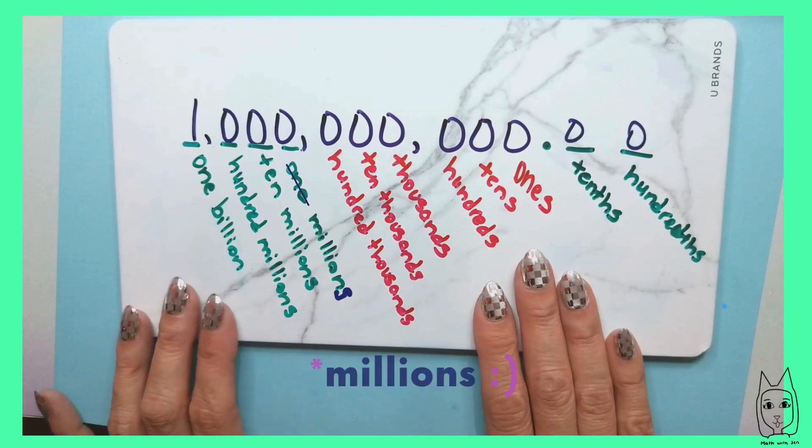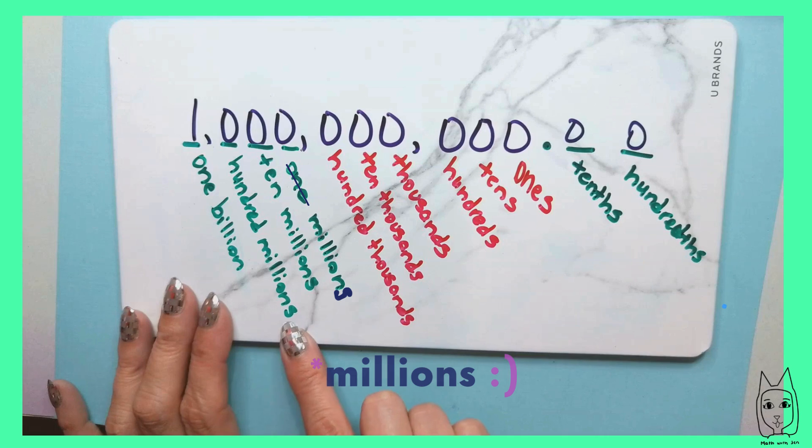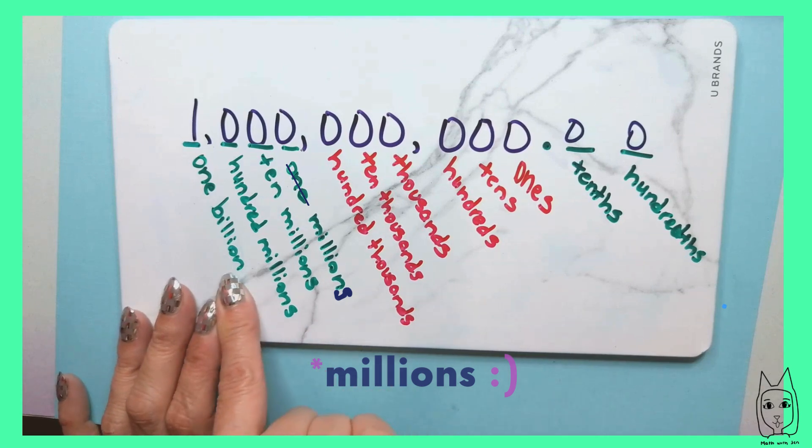For grade four, you are now going to expand your place value knowledge to 1 million, 10 millions, 100 millions, and 1 billion.